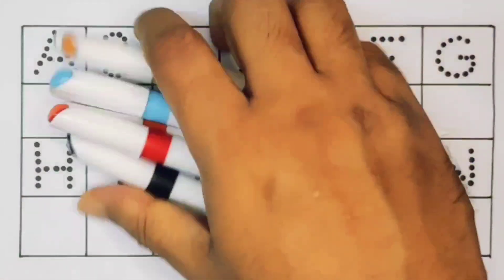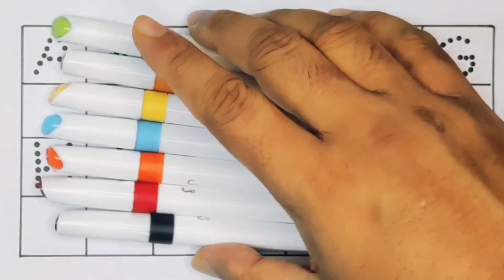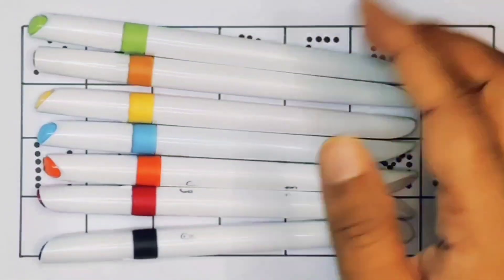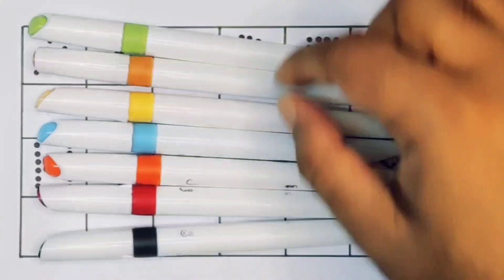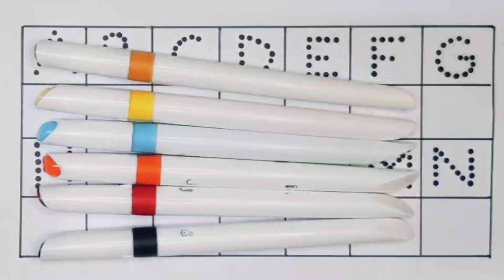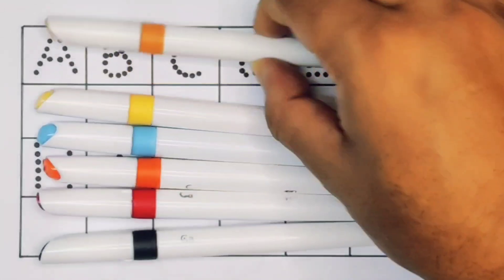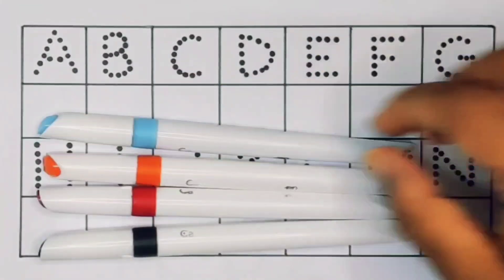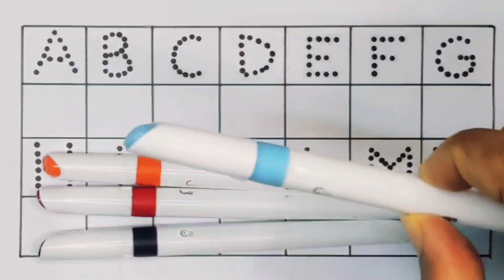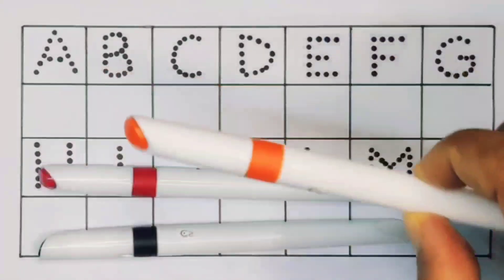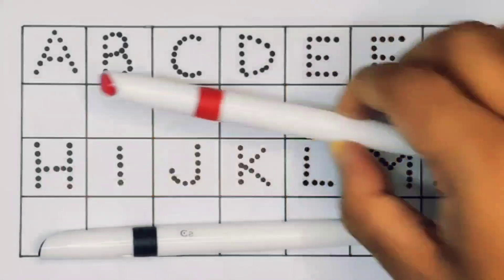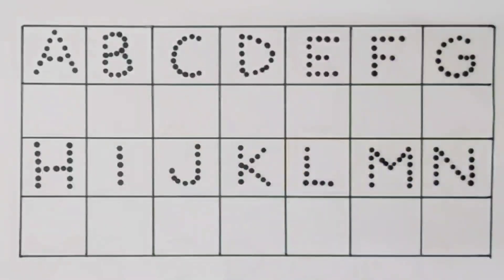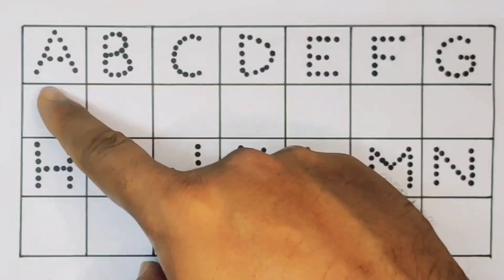Hello kids, welcome to my new video. First we're going to learn the color names: light green, brown, yellow, sky blue, orange, red, and black. Now let's learn the alphabet.